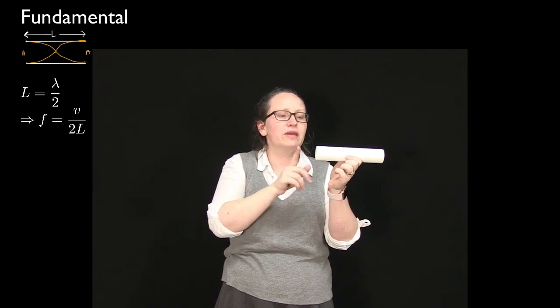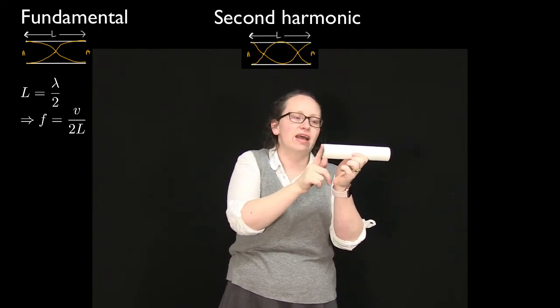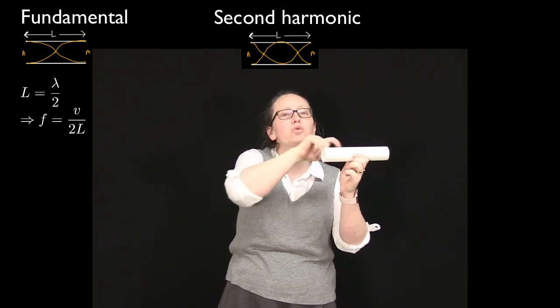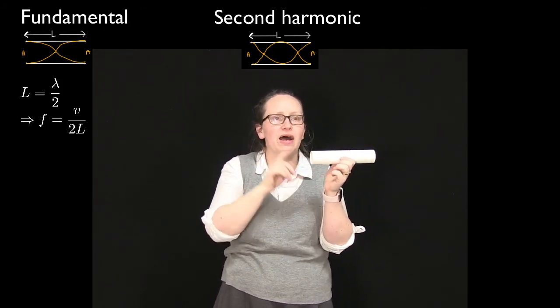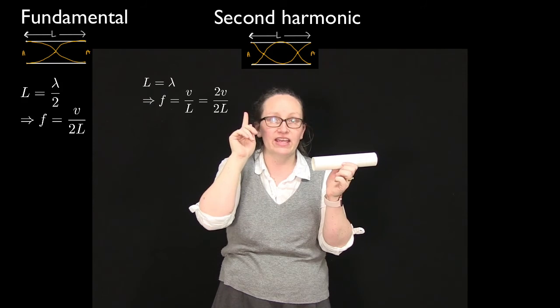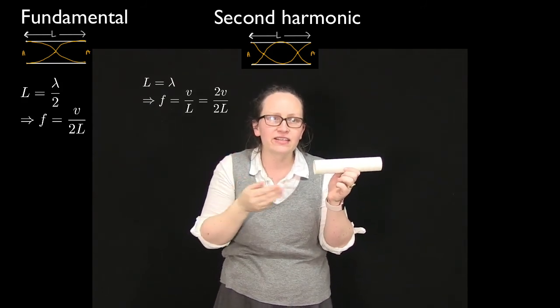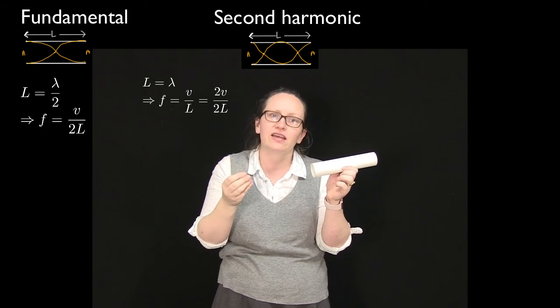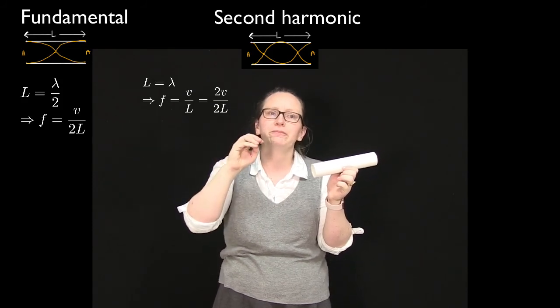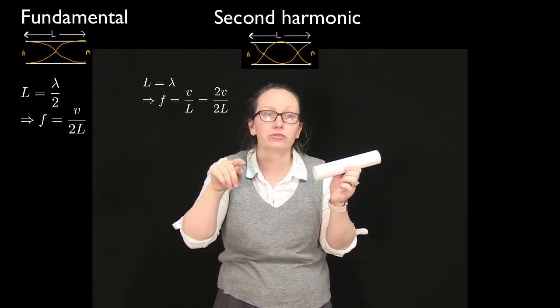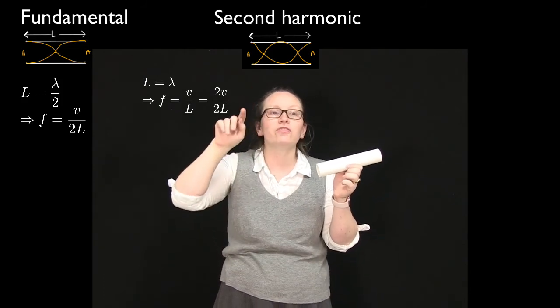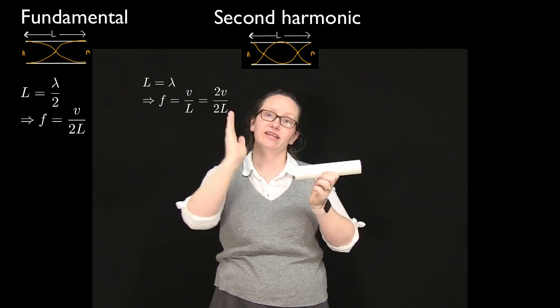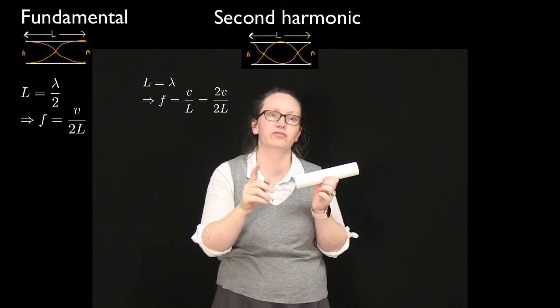The next harmonic will be when we've got an antinode here and here, and we actually have a full wavelength inside the pipe, as shown in this figure here. So in this case the length of the pipe is equal to the wavelength, and the frequency is equal to v over L, or we could write this as 2v over 2L if we wanted. Mathematically those are the same thing, and in a minute we'll see why it could be useful to write it that way.